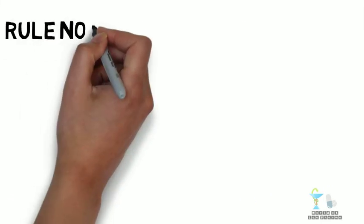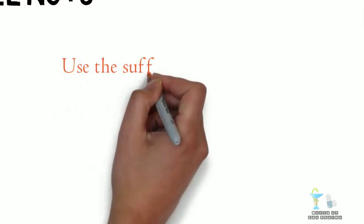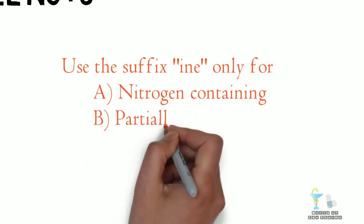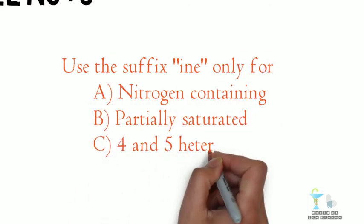Rule number 3: Use the suffix ine only for nitrogen-containing, partially saturated, 4- and 5-membered heterocyclic rings.